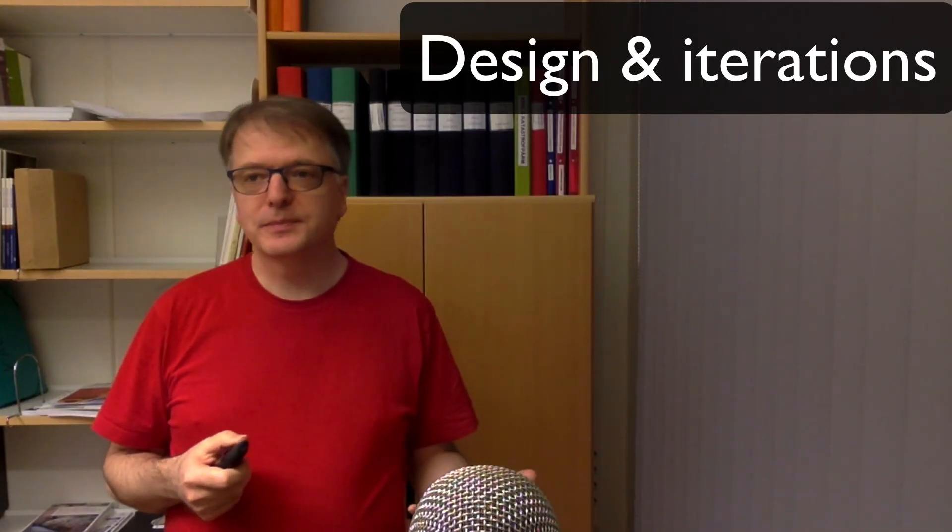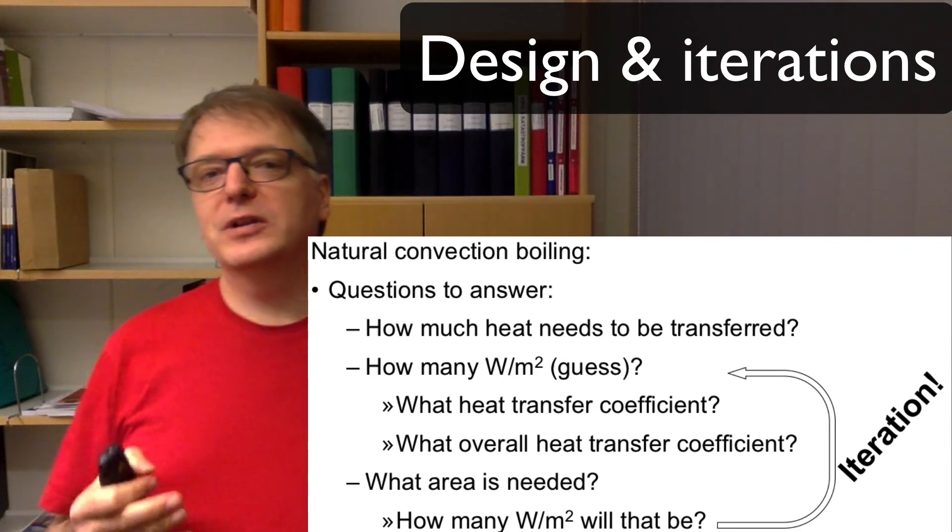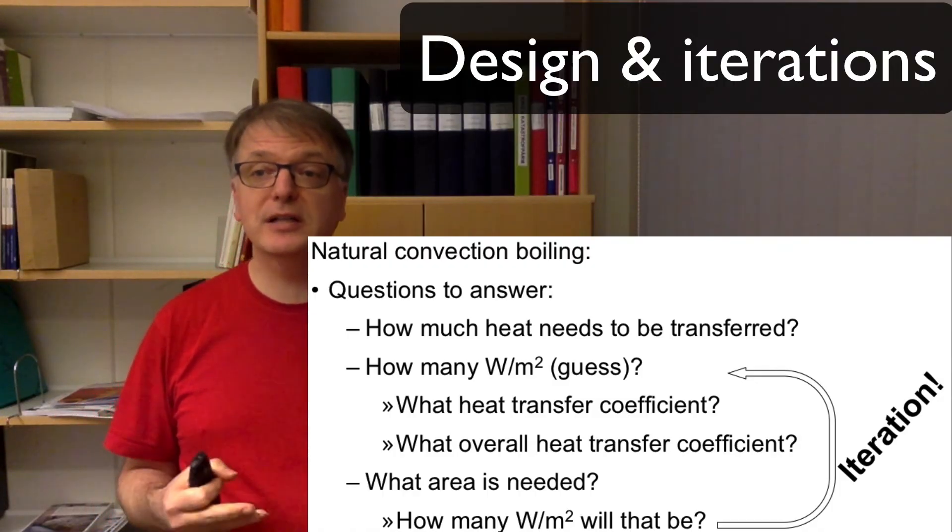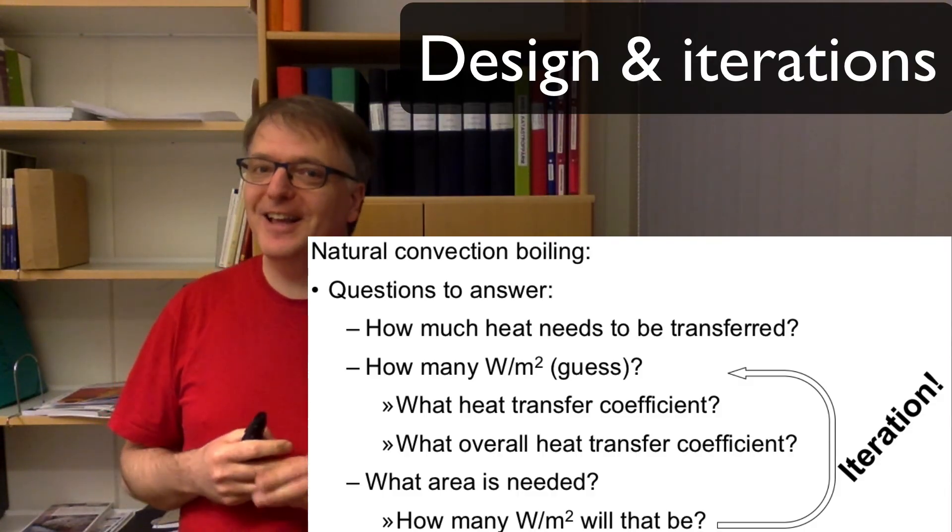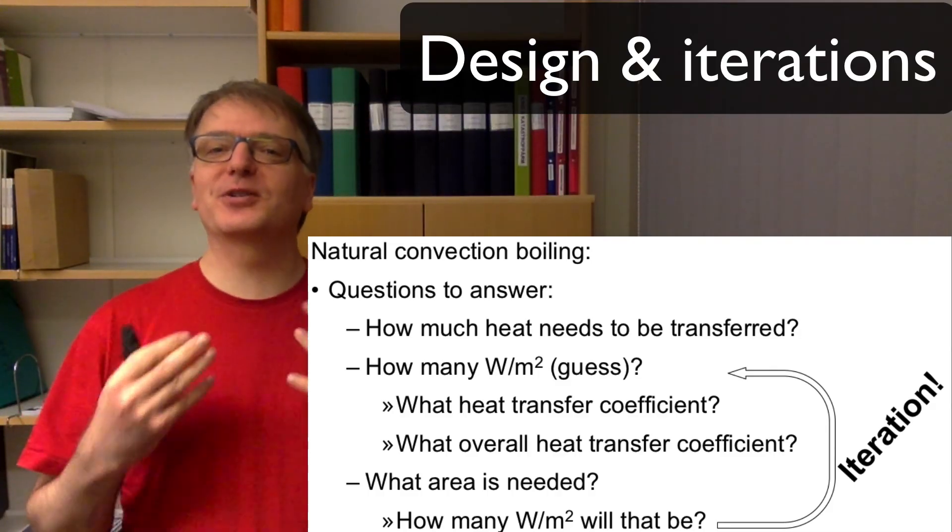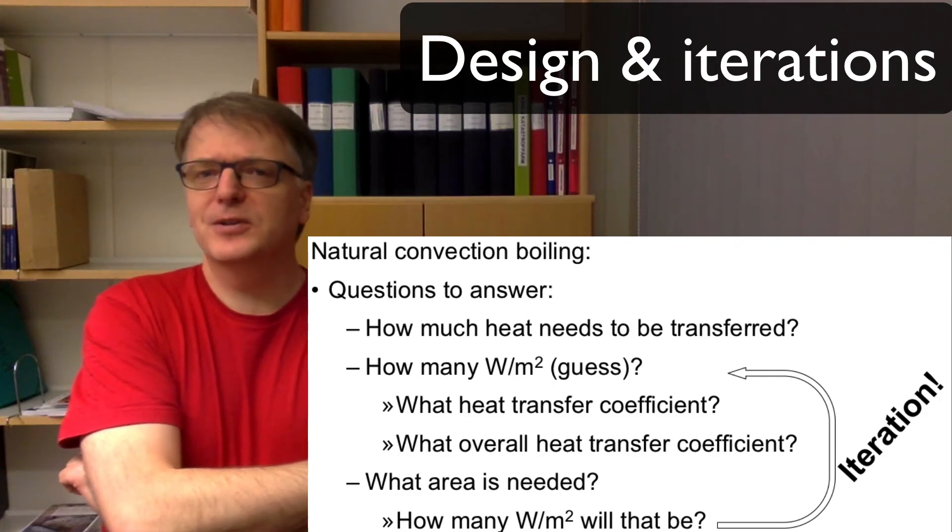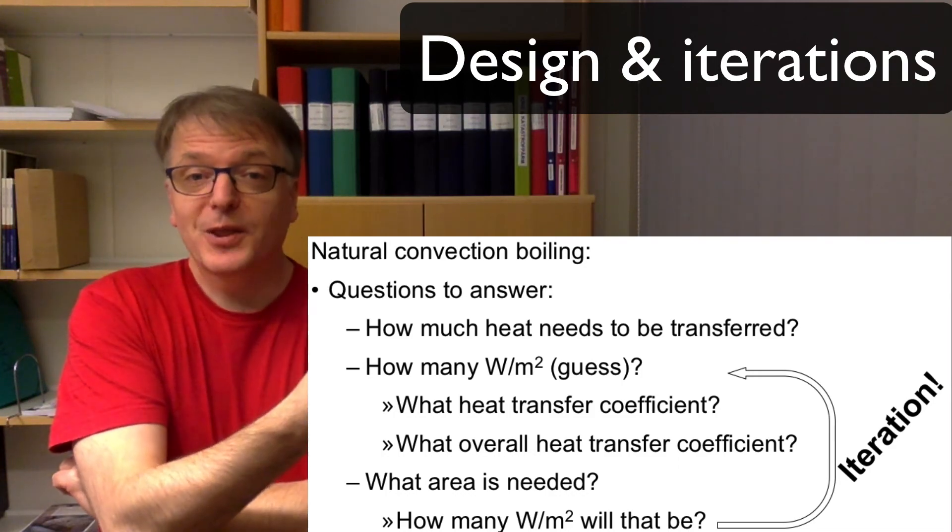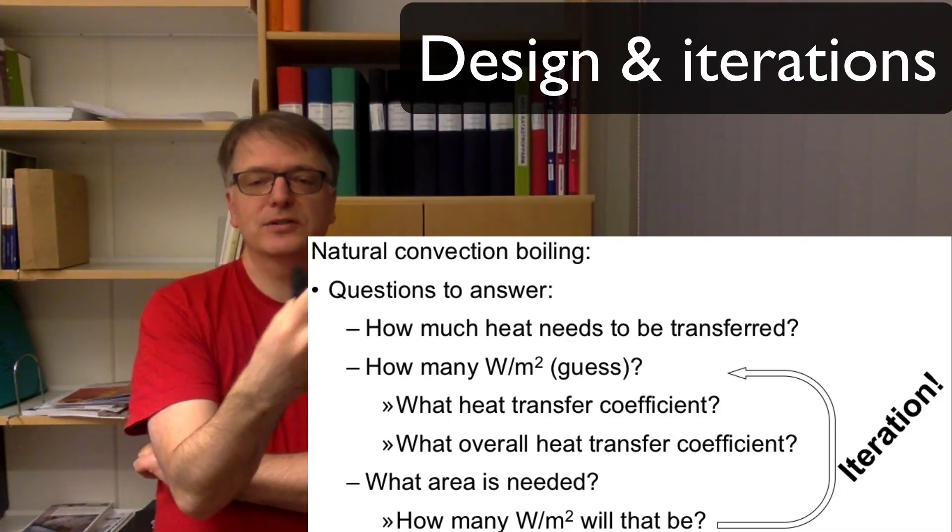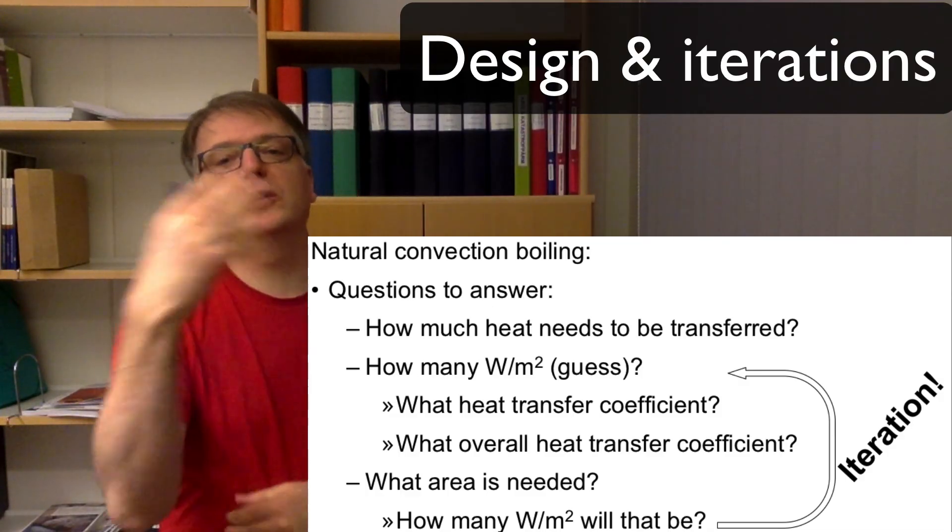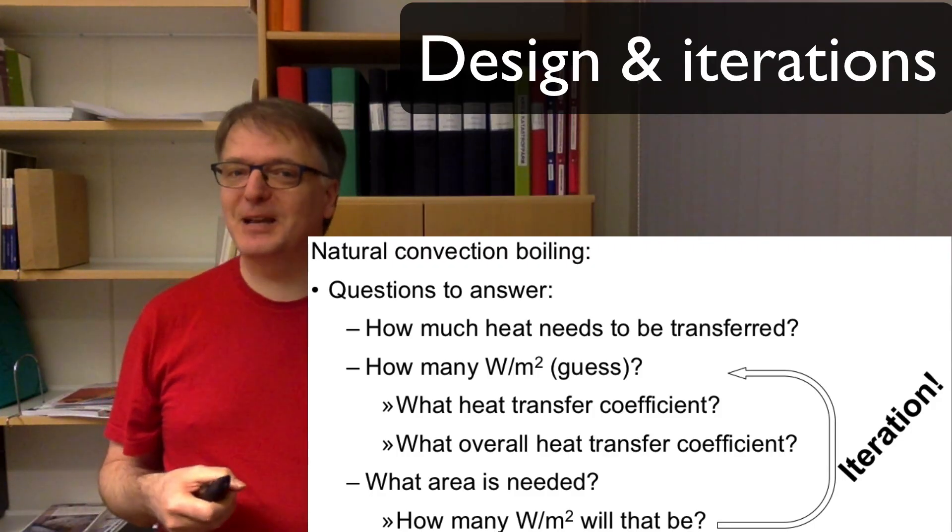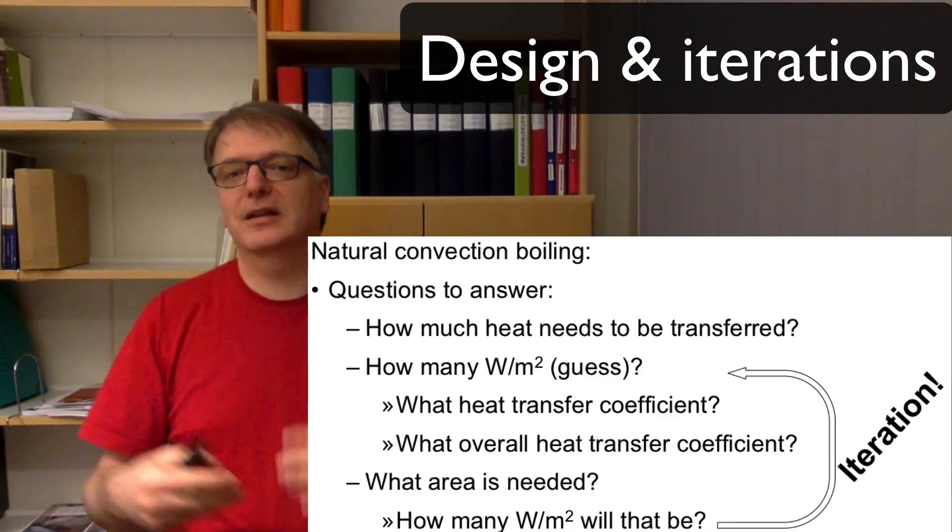If you have boiling, well it all depends on how difficult equations are used. We will use the natural convection boiling. Then the first question we need to ask ourselves is how much heat needs to be transferred, and then the second thing is, okay, so how many watts per square meter will that be? We are going to try to calculate the heat exchanger area and we need to know how much energy is being transferred per square meter. So guess something—you guess how many watts per square meter you need to transfer, and then you calculate the heat transfer coefficients using these equations. Then you calculate the overall heat transfer coefficient, then you calculate the area needed, then you calculate how many watts per square meter will that be. If you're lucky that is the same number as you guessed before, and if you're unlucky you just have to repeat until you find a solution.